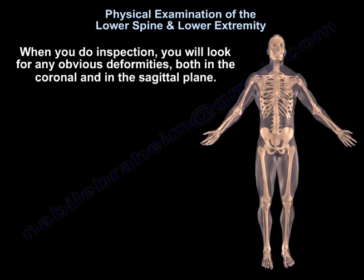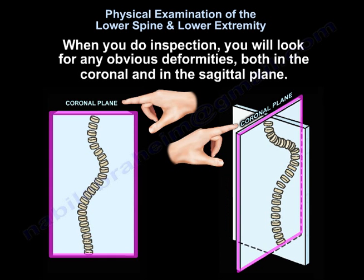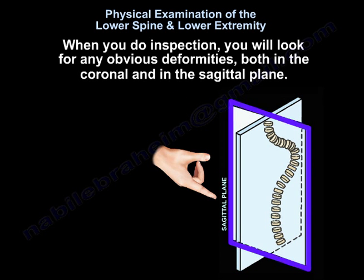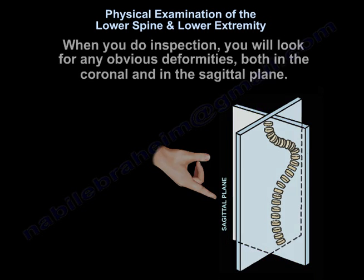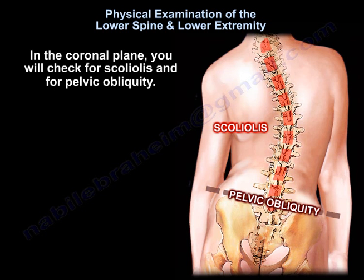When you do an inspection, you will look for any obvious deformities, both in the coronal and in the sagittal plane. This is the coronal plane, and this is the sagittal plane. In the coronal plane, you will check for scoliosis and for pelvic obliquity.